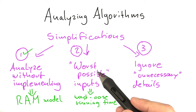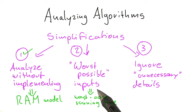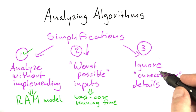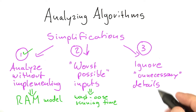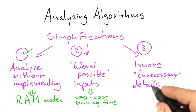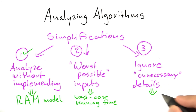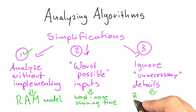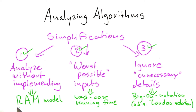Looking at the worst possible inputs is a concept called worst-case running time. And finally, to ignore all unnecessary details, we'll use a type of notation called big O notation, or Landau notation. So let's start out with our theoretical computer called the RAM.